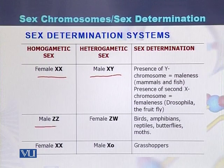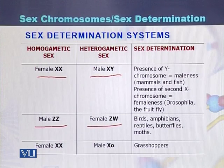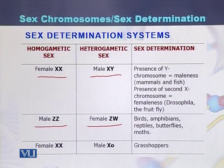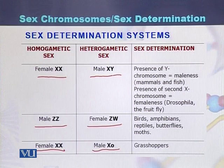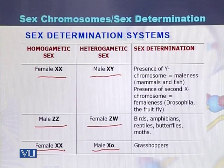In the bird system, the male is homogametic and has Z and Z chromosomes, while the female has Z and W chromosomes. The third system is found in the grasshopper, where the female is homogametic and is XX, while the male is X0, meaning there is only one X chromosome. If there is one X chromosome the grasshopper will be male; if there are two X chromosomes it will be female.